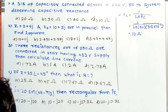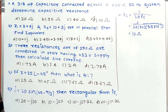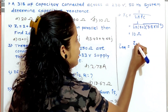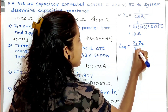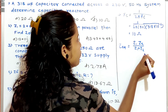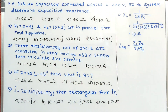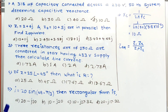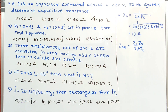When two impedances are connected in parallel, Z equivalent = Z1 × Z2 / (Z1 + Z2), similar to two resistors in parallel. For multiplication we require polar form, and for addition and subtraction we require rectangular form. Z1 and Z2 are already in rectangular form, so we need to convert them to polar form.